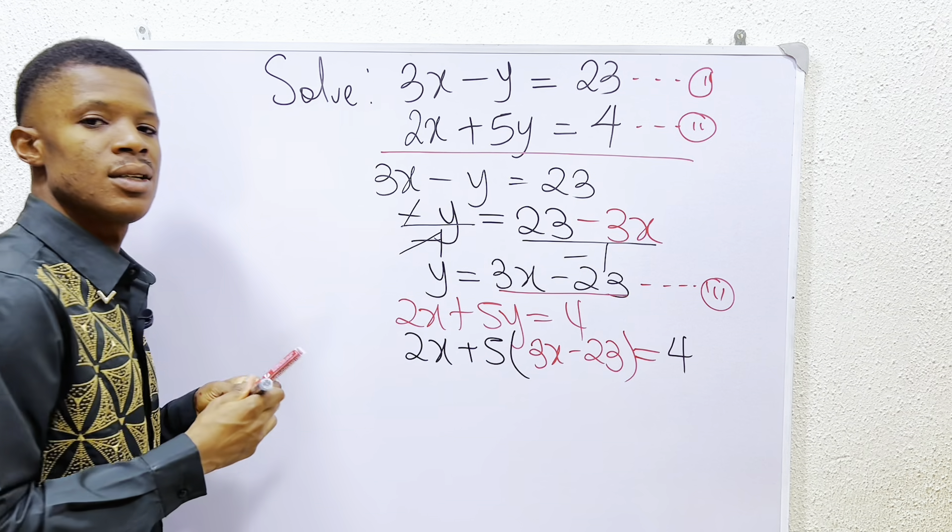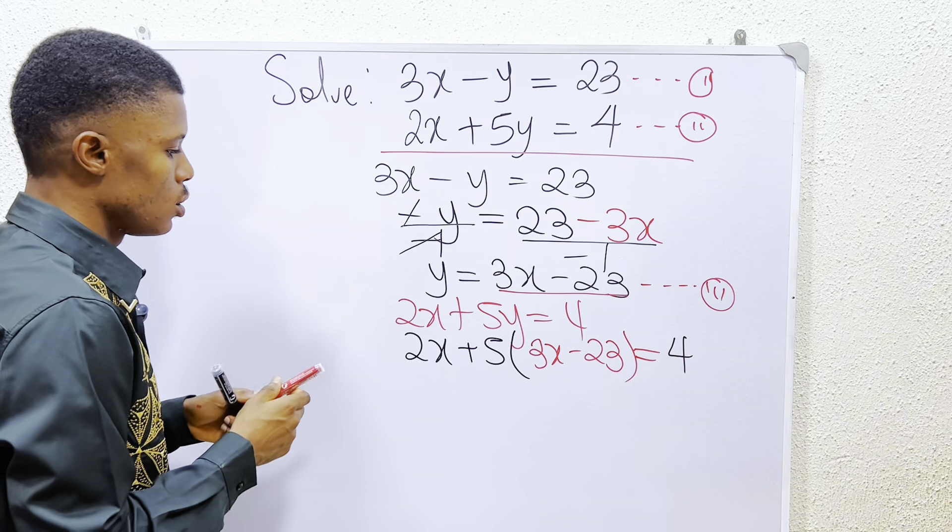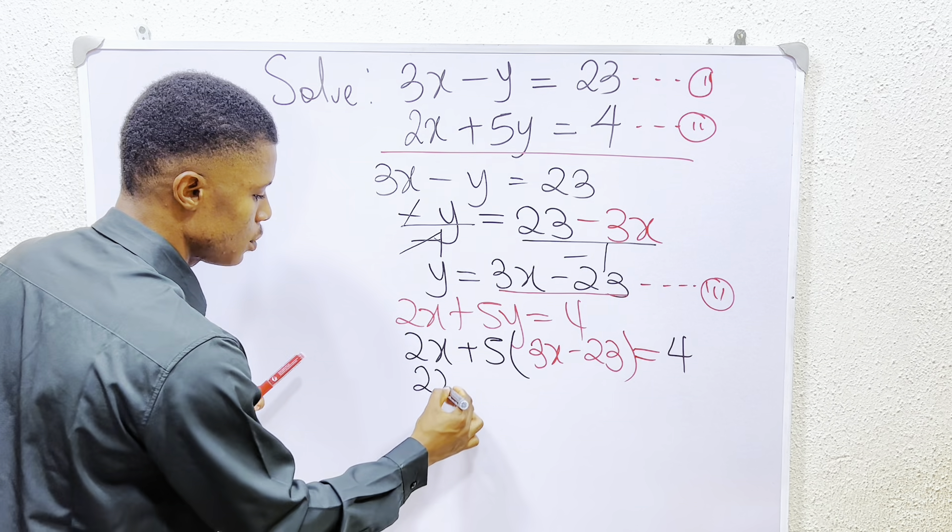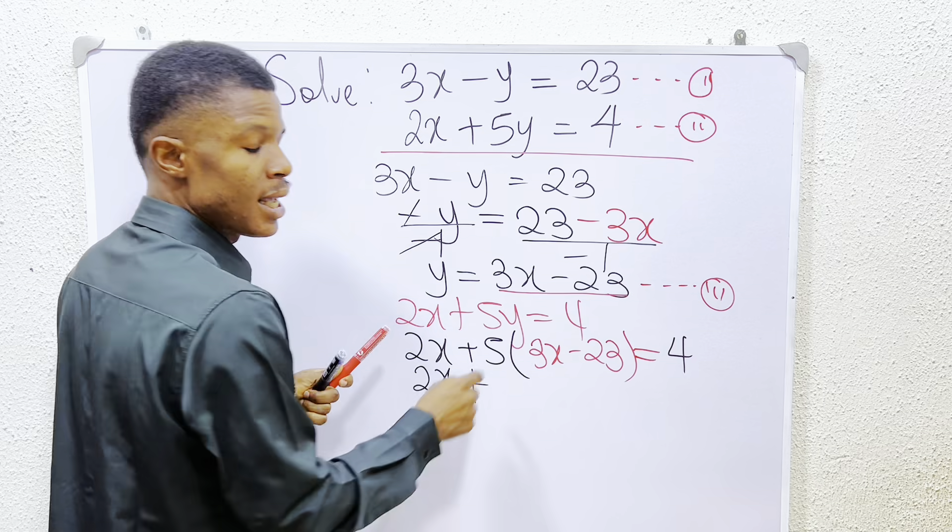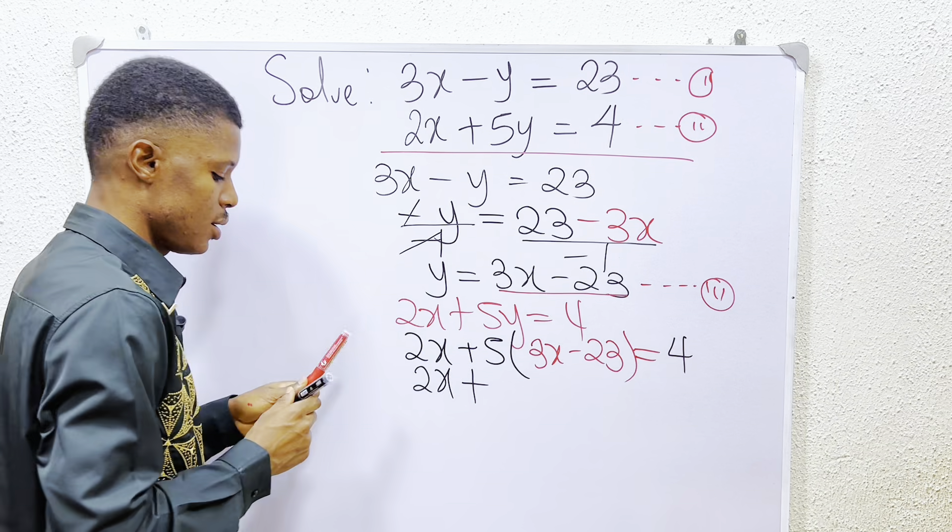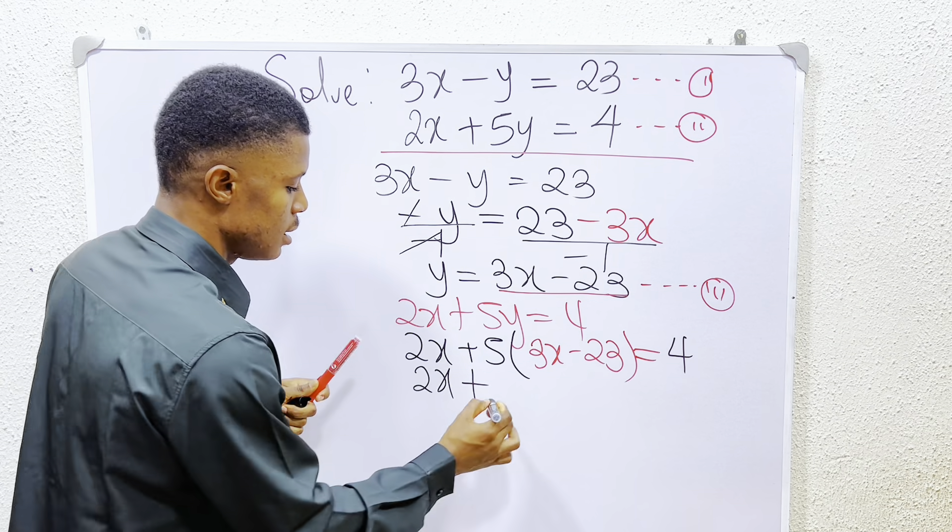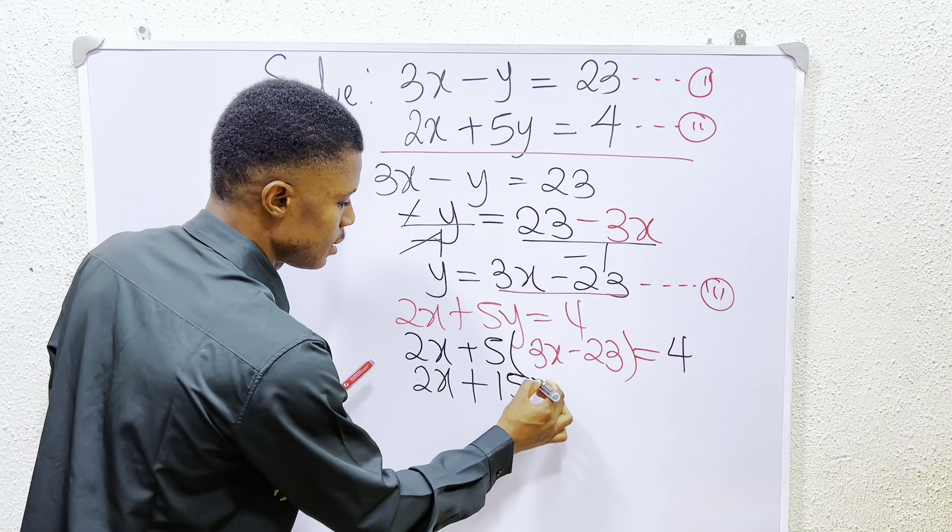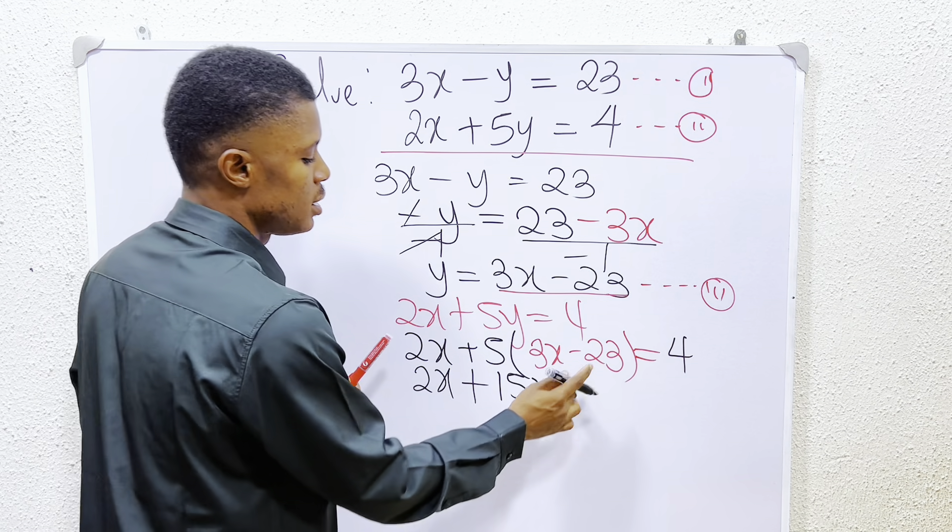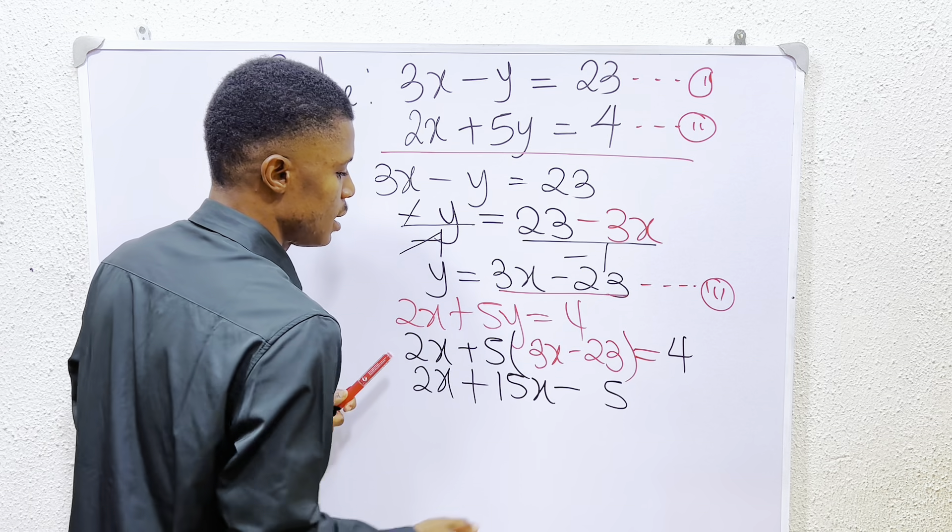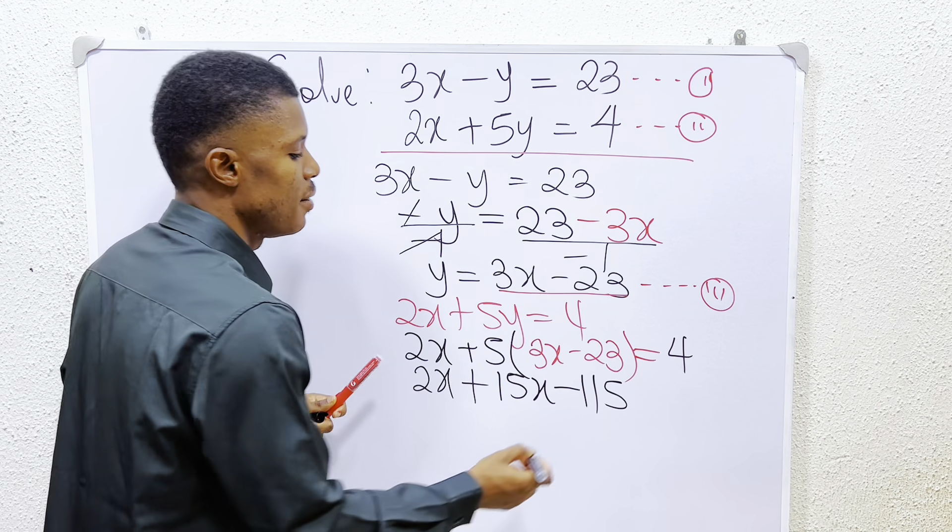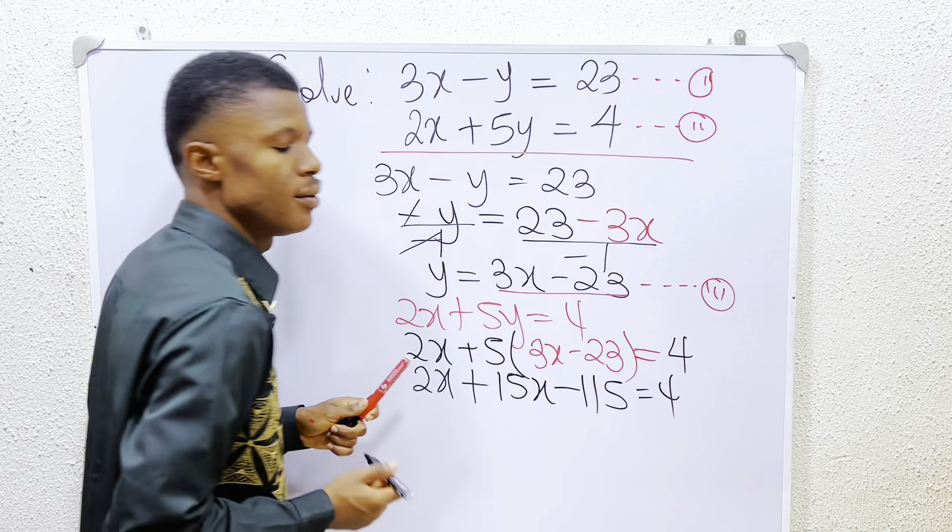So the next thing we do is simple to open the bracket. So what do we do? We have it as 2x plus 5 times 3x. Let's know that in the comment section. 5 times 3x is 15x, and 5 times 23, you have it as minus 5 times 3 is also 15. 5 times 2 is 10. So we have it as 115, and that's equals to 4.